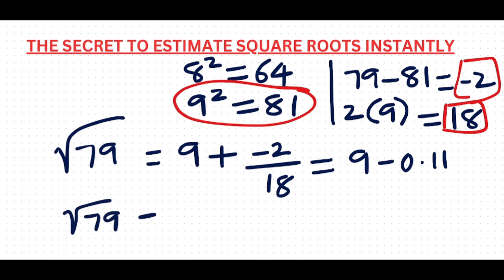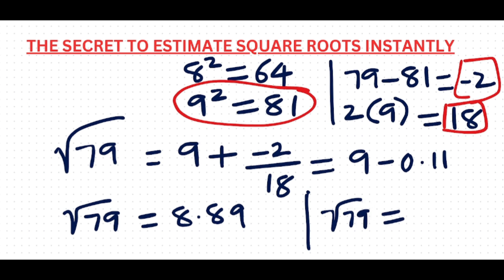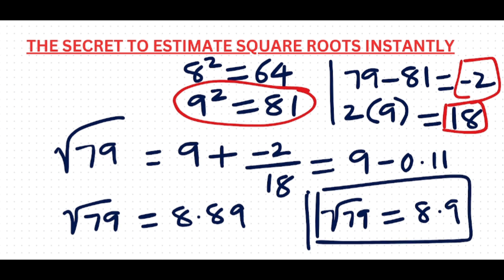So the square root of 79 equals 9 minus 0.11, which is approximately 8.89. When rounded to one decimal, the square root of 79 is 8.9. Thanks for watching! If you enjoyed this video, drop a comment below and let me know your thoughts, and don't forget to hit that subscribe button so you never miss out on more amazing math shortcuts.